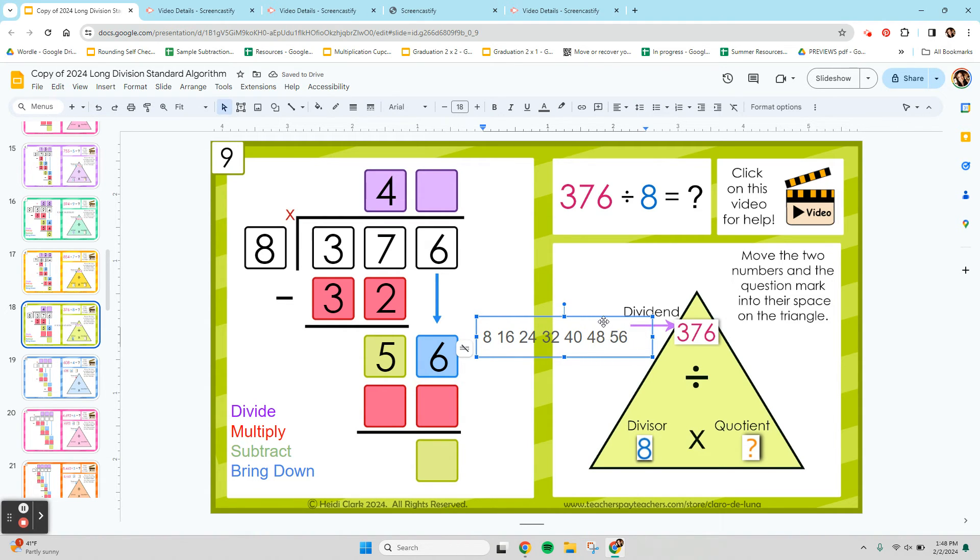And see that you can get 56 exactly. So how many 8s was that? 1, 2, 3, 4, 5, 6, 7. You can fit 8 into 56 7 times.